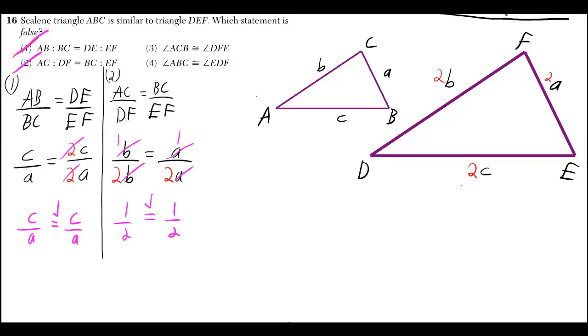Angle ACB is formed by starting at A and going to C and then to B. And that angle is actually equal to DFE. Why? Because in similar triangles, they have the same shape. If they have the same shape, that means their angles are going to have to be equal. The corresponding angles are going to have to be equal, and these two angles do correspond to one another. So this statement is not false either.